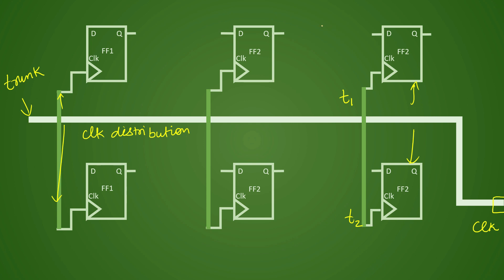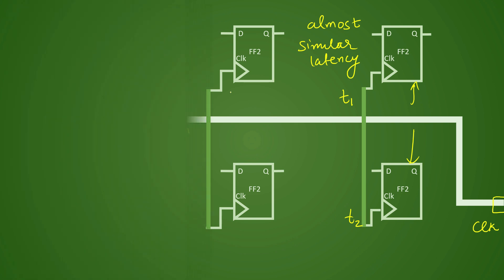So if time taken by the clock to reach at this point is T1, the T2 minus T1 will be very, very, very less. So in that case you can say that you have almost similar latency everywhere. And when you have almost similar latency, then in that case the skew will not be very high, it will be less or within the range or acceptable limit. So you should have your skew in the acceptable limit.